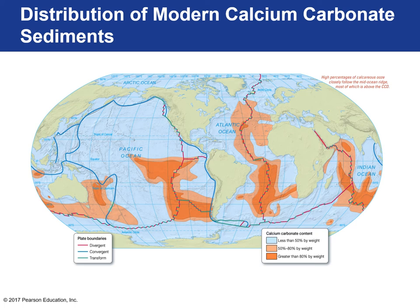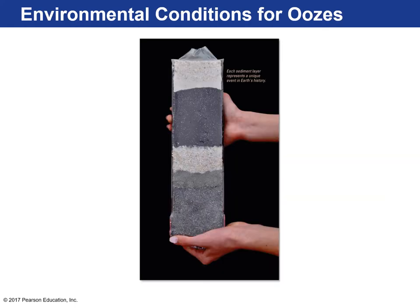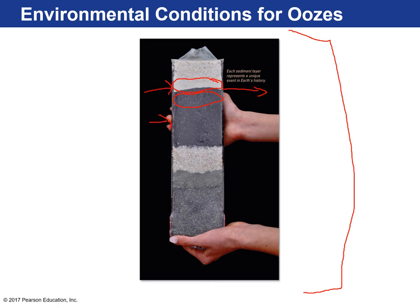The modern distribution of calcium carbonate sediments shows them depositing in shallower areas of the deep ocean, particularly close to mid-ocean ridges, because those areas are typically above the CCD. In a core cross-section, changes in coloration can reflect shifts from biogenous ooze to abyssal clay as the ocean floor moved away from the mid-ocean ridge over time, preserving the biogenous ooze beneath the clay layer.